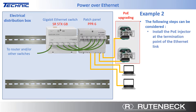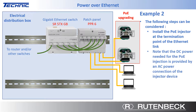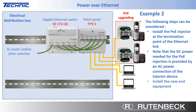Install the power over Ethernet injector at the termination point of the Ethernet link. Note that the DC power needed for the power over Ethernet injection is provided by an AC power connection of the injector device. Install the new end equipment with power over Ethernet capability.